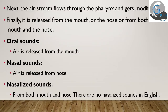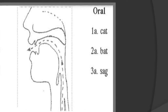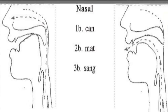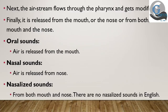From the larynx, the air stream passes through the pharynx and gets modified. Finally, it is released from the mouth or the nose or from both the mouth and the nose. When the air stream is released from the mouth only, the sounds produced are called oral sounds. When it is released from the nose only, the sounds produced are called nasal sounds. When it is released from both the mouth and the nose, the sounds produced are called nasalized sounds.